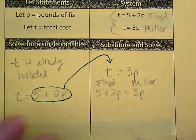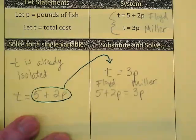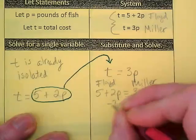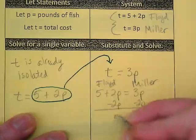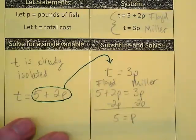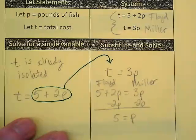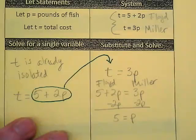So we need to solve 5 plus 2p is equal to 3p. We need to get like terms together. So what am I moving? I want to move the 2p. 5 is now equal to p. 3p minus 2p is equal to just 1p, which is one pound. How much is one pound of fish? 5 dollars.